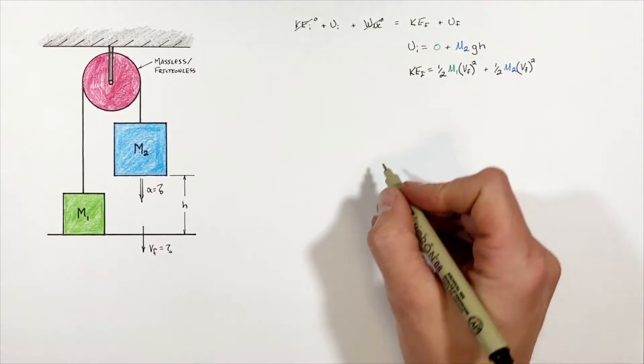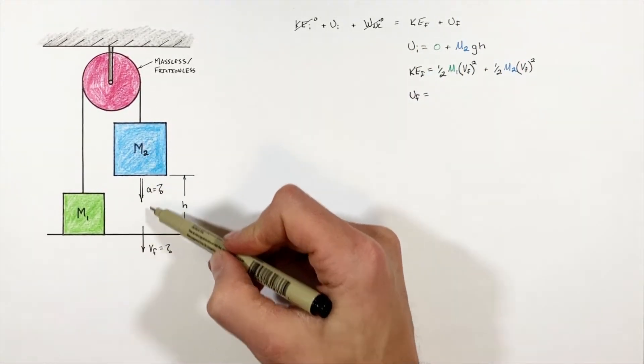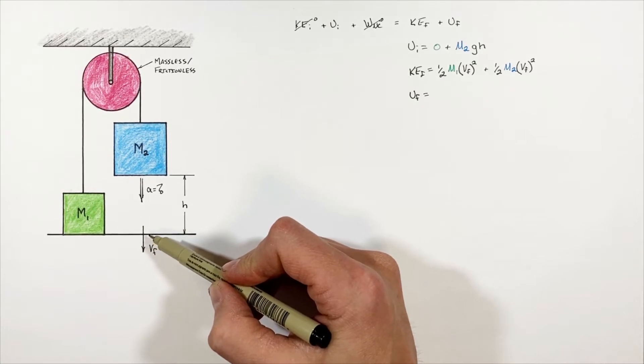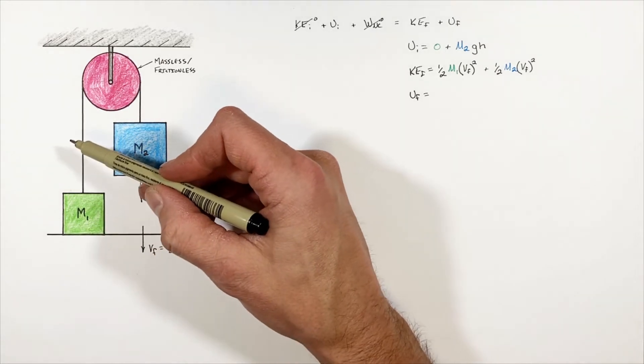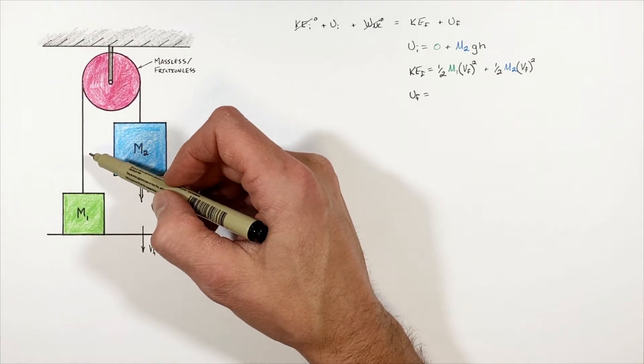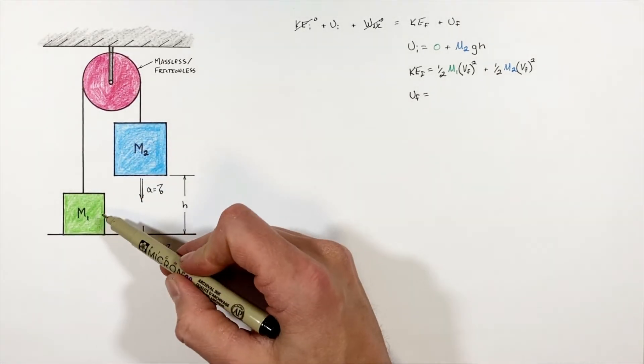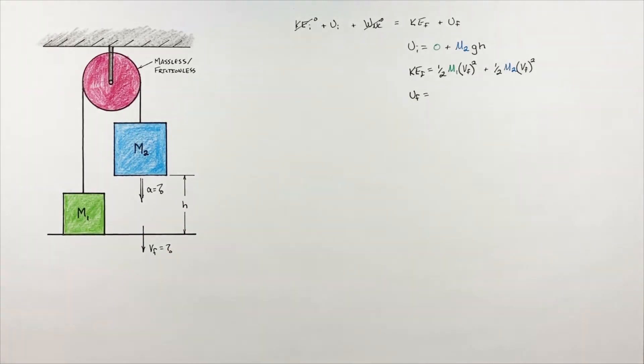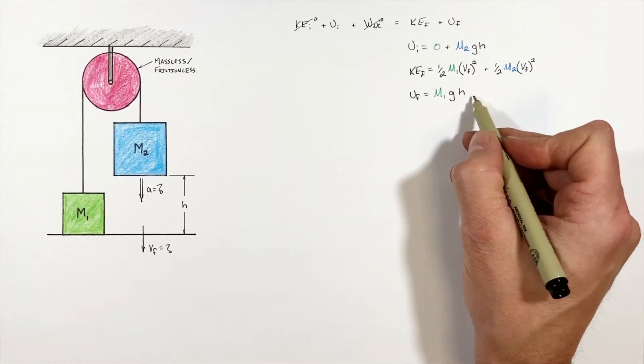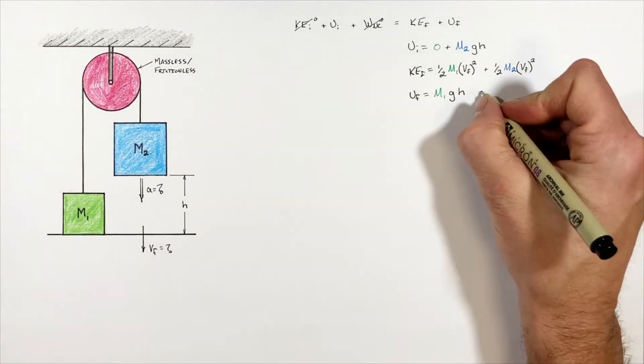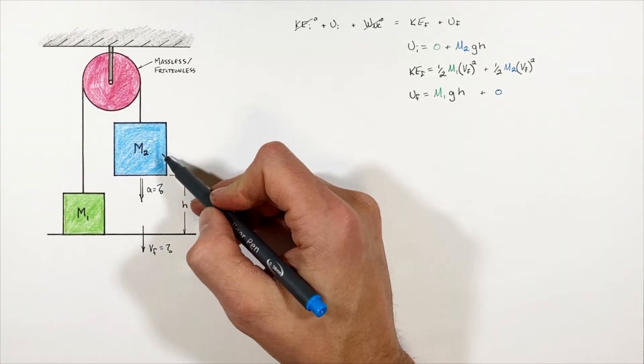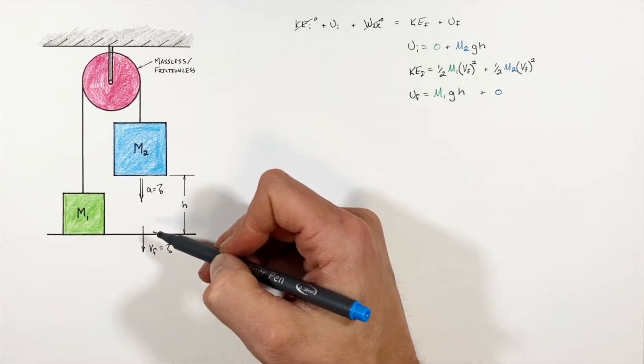Now last we have our final potential energy. And it's true that as this block moves downward, it's going to lose all of its gravitational potential. But as this block is moving down, this other block is going to move up and thus gain gravitational potential energy. So the final gravitational potential of this block is going to be m1gh, where h is the same height at which the second block started. And this block is going to finish with zero gravitational potential because it's going to be on the ground.